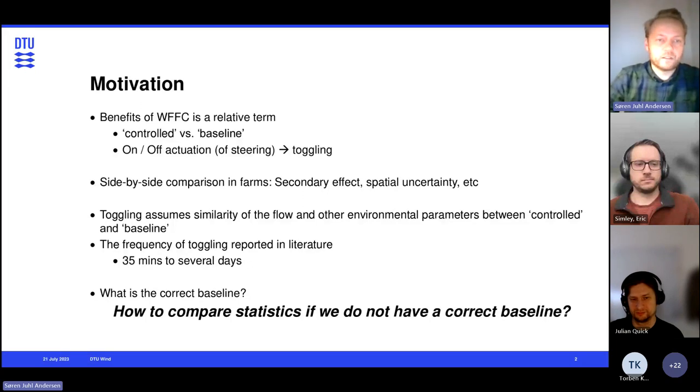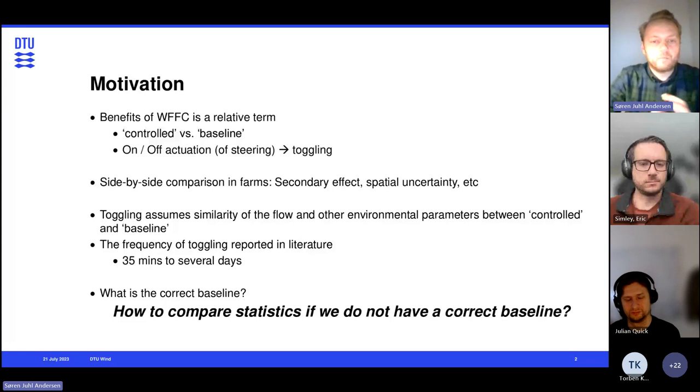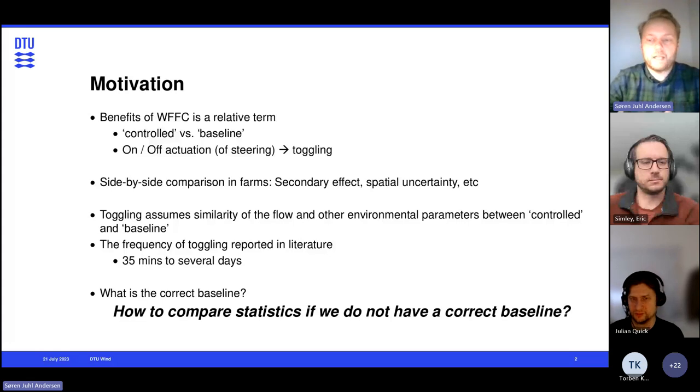And if we look at the toggling frequency in literature, it ranges from relatively short periods of 35 minutes to several days. But really what we want to try and get closer to here is what is the correct baseline. So essentially, how do we compare statistics if it's not obvious what is the correct baseline, or if we cannot even obtain a correct baseline.